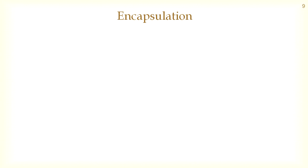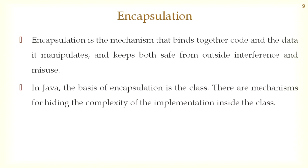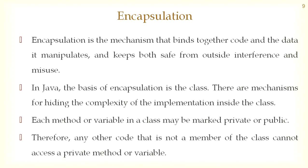The next topic is encapsulation. Encapsulation is a mechanism that binds together code and the data it manipulates, and keeps both safe from outside interference and misuse. In Java, the basis of encapsulation is a class. Each method or variable in a class may be marked private or public. Therefore, any other code that is not a member of the class cannot access a private method or variable.